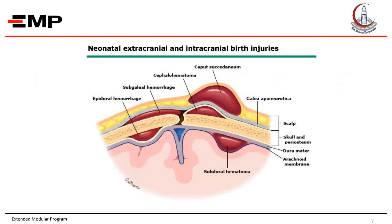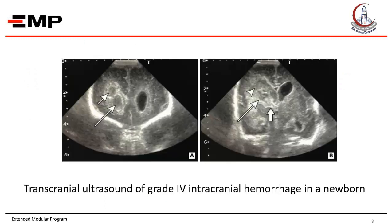Another type of hemorrhage is subgaleal hemorrhage, due to rupture of the emissary veins during vacuum-assisted delivery. This bleeding occurs above the periosteum and crosses the suture line. Other types of bleedings include epidural hemorrhage above the dura and subdural hematoma below the dura. This picture shows transcranial ultrasound of grade 4 intracranial hemorrhage in a newborn, where the long arrow shows the bleeding.